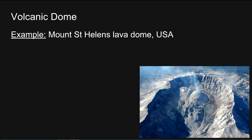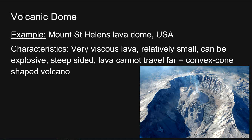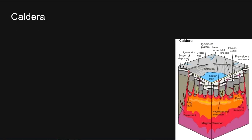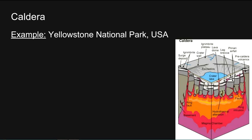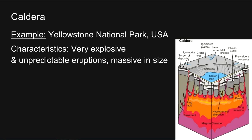Volcanic dome: an example is the Mount St. Helens lava dome. Characteristics include very viscous lava, relatively small, can be explosive, steep-sided, lava cannot travel far, and this gives a convex cone-shaped volcano. Finally, caldera: an example is Yellowstone National Park in the USA. Characteristics include very explosive and unpredictable eruptions, very massive in size, and rock type is mainly andesitic.